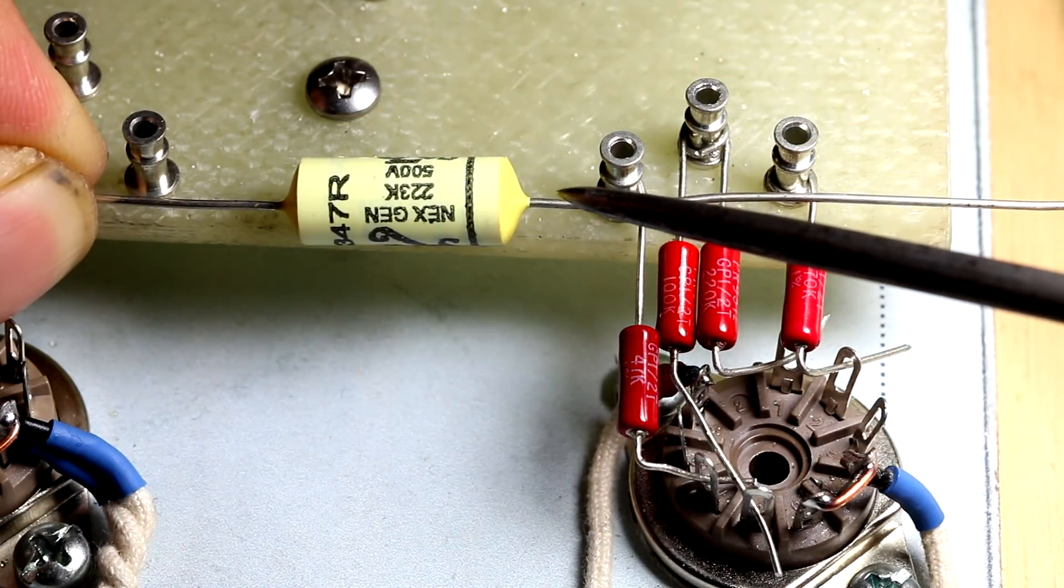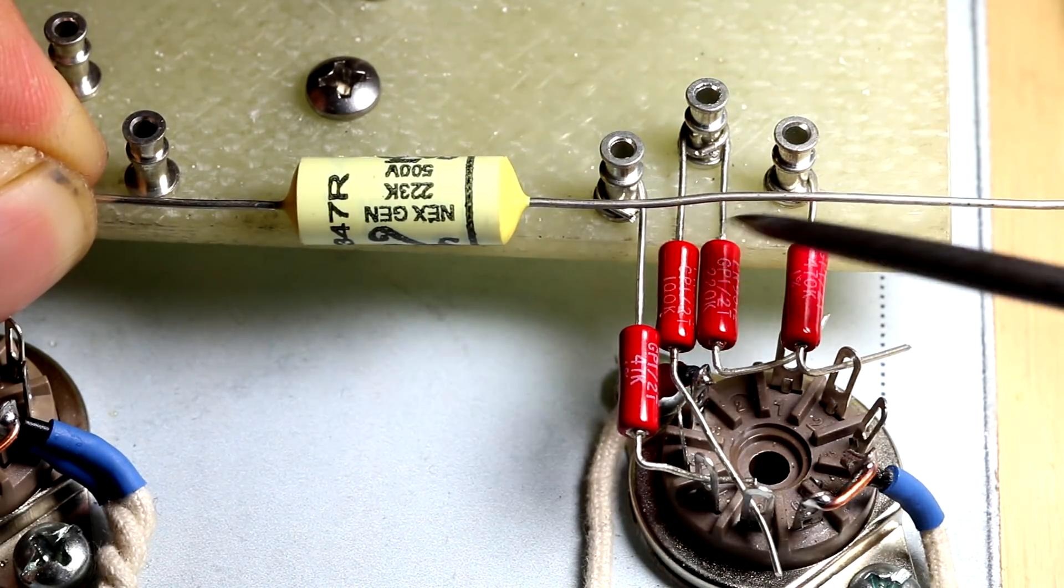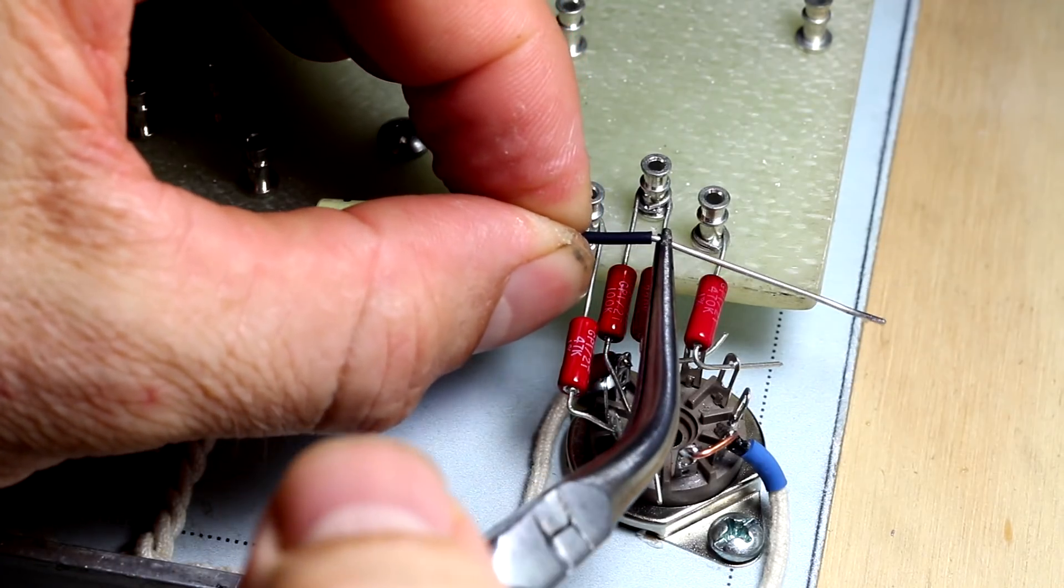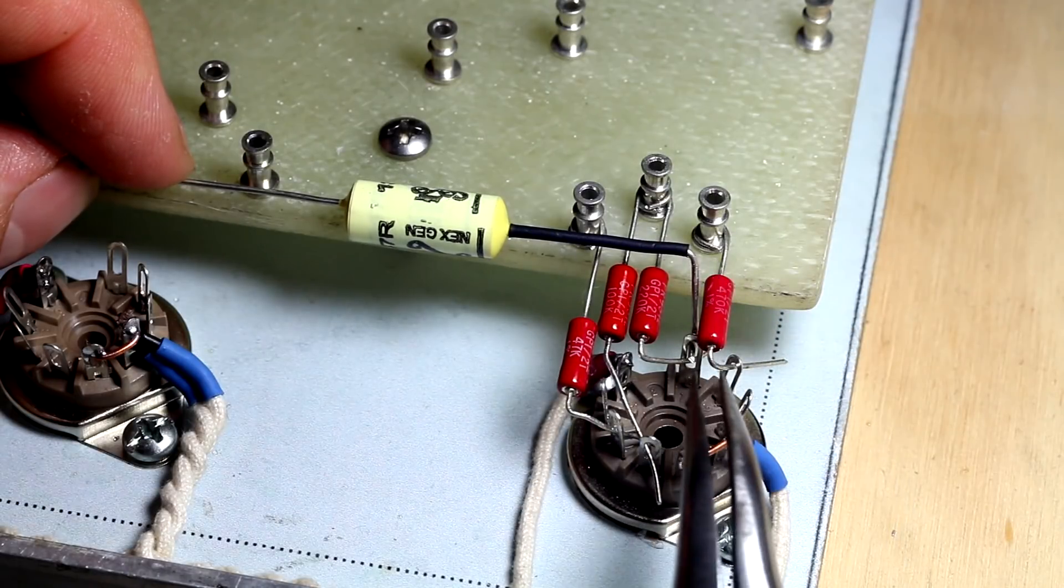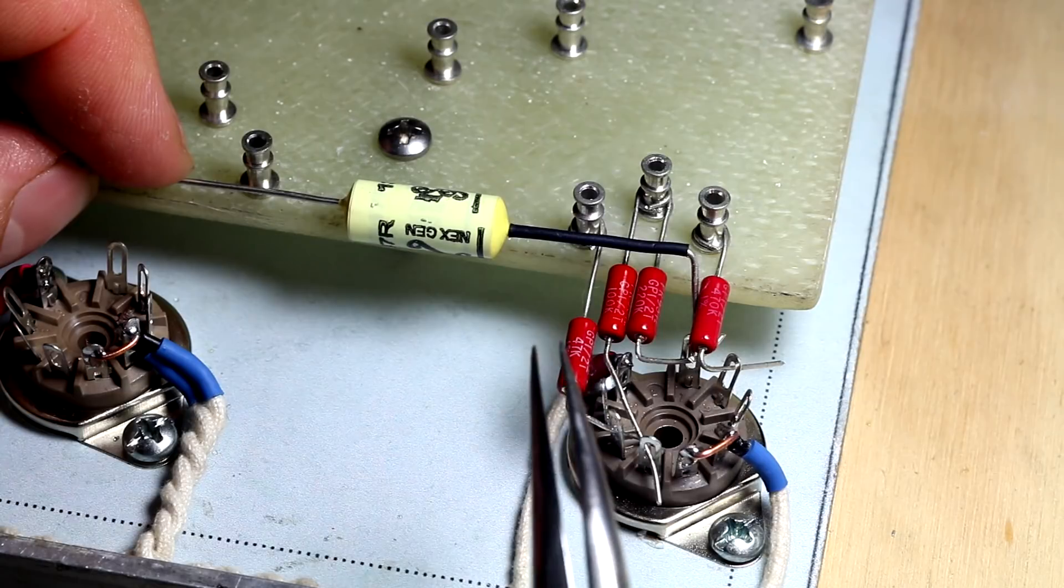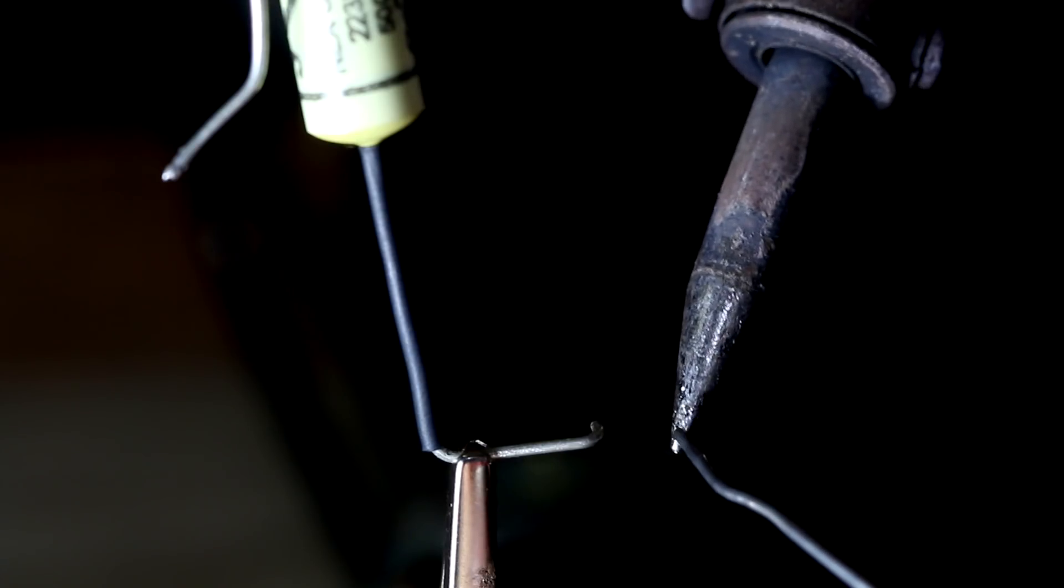We'll certainly have to put a sleeve of insulation on here. And what I'll do now is just I'll get rid of this component so I can solder these in place. We'll just tin those components.